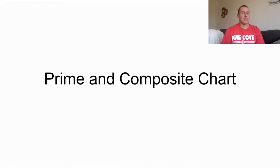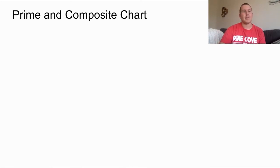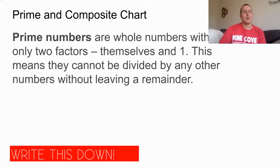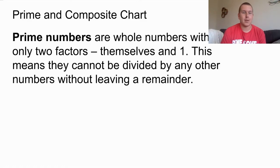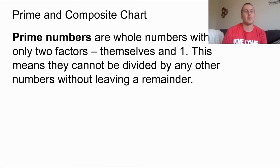Something that might be important first is to figure out what the words prime and composite mean. So let's take a look at that. Prime numbers are whole numbers with only two factors — themselves and one. This means they cannot be divided by any other numbers without leaving a remainder, so they only have two factors.